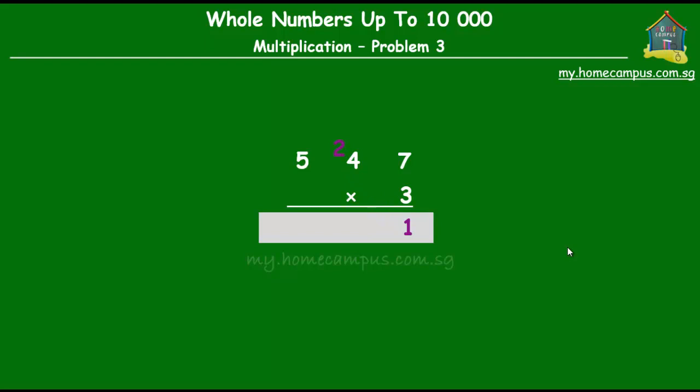Next step is to multiply the tens by 3. So, 4 tens times 3 is 12 tens plus 2 tens is equal to 14 tens. We keep the 4 in the tens place and we carry over the 1 to the hundreds place.